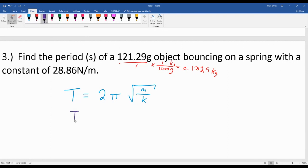From there, we're free to plug stuff in. Remember 2 and π are just numbers, so you should be able to find them pretty easily on your calculator. The mass is 0.12129 kilograms, and then the spring constant, 28.86 newtons per meter.